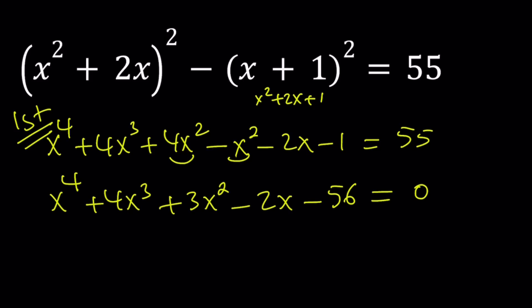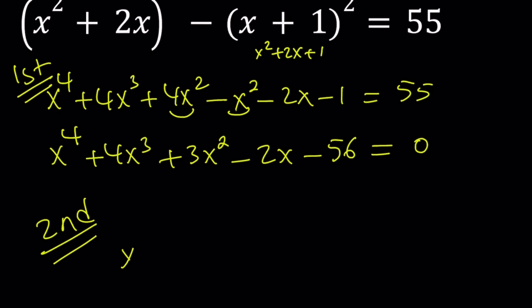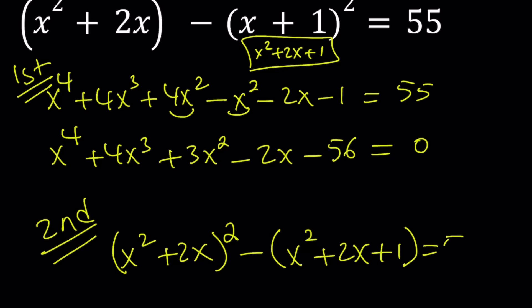If you look at this expression carefully, you can expand partially. So like, let's say this is our second method. Just leave this alone. And then expand (x + 1)², but keep it inside parentheses. What is (x + 1)²? We just talked about it. It is x² + 2x + 1, and that equals 55.